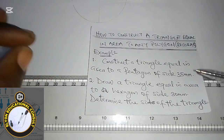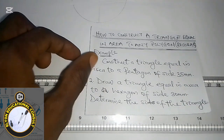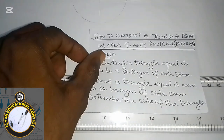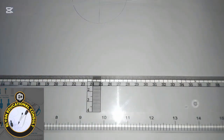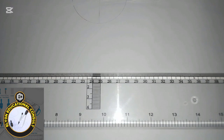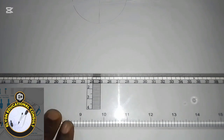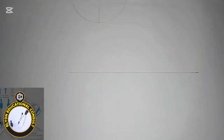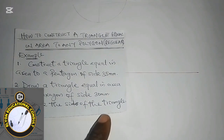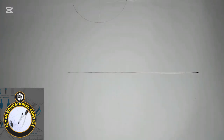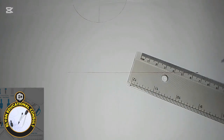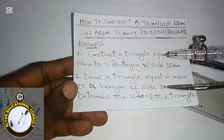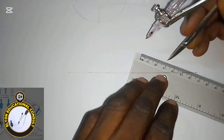Before we can draw the triangle equal in area to the hexagon, we need to construct the hexagon first. I've done that in my previous video — you can take a look at that in the playlist — but I will quickly do it here. I'm going to be using the compass to measure the length of side of the hexagon, which is 30 mm.